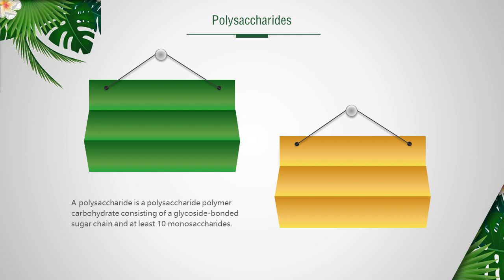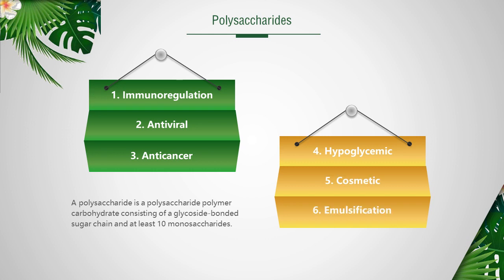Polysaccharide is a kind of polysaccharide polymer carbohydrate, which is composed of glycoside-bonded sugar chains and at least more than 10 monosaccharides. Polysaccharides can be used in immunoregulation, antiviral and anticancer, hypoglycemic, cosmetic, emulsifying and other fields.